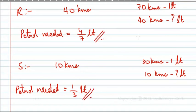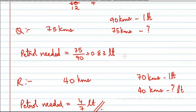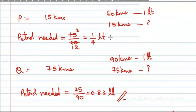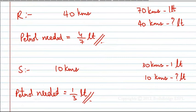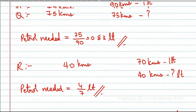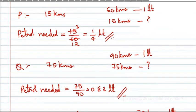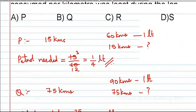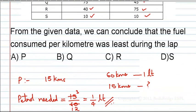Comparing all four laps: lap R needs 4/7 liter, lap Q needs 0.83 liters, lap P needs 1/4 liter (25%), and lap S needs 1/3 liter (33%). Since 1/4 is the least among all values, lap P consumed the least petrol. Therefore, option A is the correct answer.